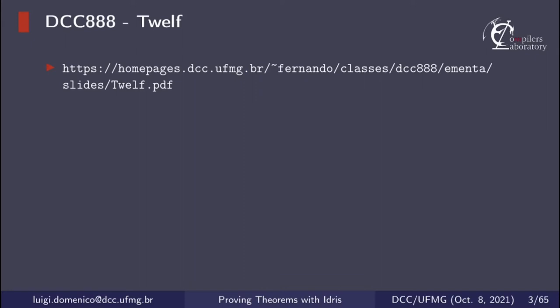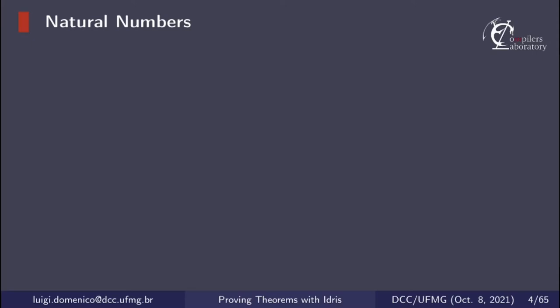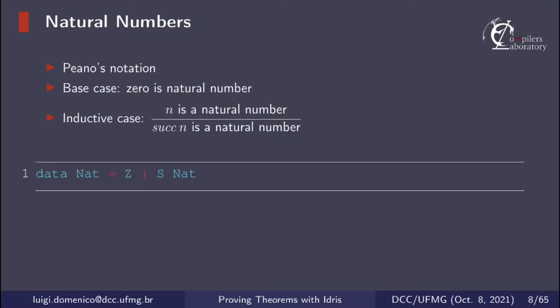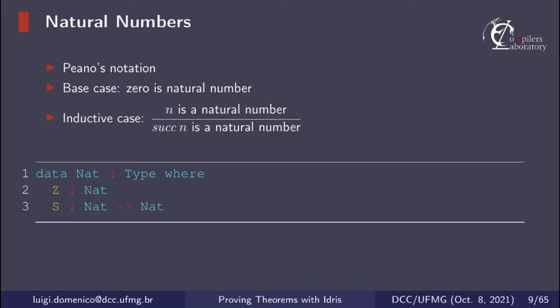For our first example we're going to talk about even numbers, but first let us define natural numbers. We are going to use Peano's notation for natural numbers: 0 is a natural number, and if n is a natural number then the successor of n is a natural number as well. We can represent the type of natural numbers in Idris as follows. If you are familiar with Haskell the syntax is quite similar, but there is another way to define data types in Idris in which we explicitly show the types of the constructors. We have the constructor Z which has type Nat, and constructor S which is a function from Nat to Nat.